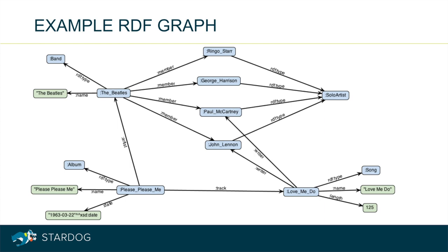In this graph, we also have nodes depicted in green representing data type values such as strings, numbers, and dates. For example, we see that the length of the La Meduse song is 125 seconds, and the release date of the Please Please Me album is March 22, 1963.